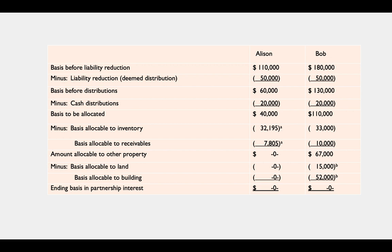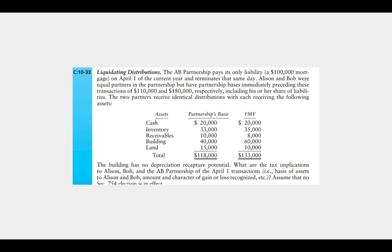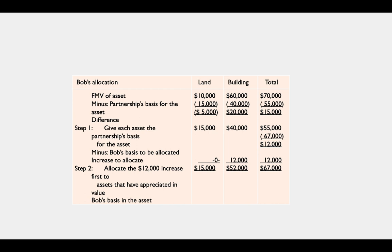When Allison eventually sells the land and building she'll recognize a large gain since her basis is zero. For Bob, after allocating the partnership's basis in inventory and receivables, he has sixty-seven thousand dollars of basis left to allocate to the land and building, which have a combined partnership basis of fifty-five thousand. Step one gives land a forty thousand basis and the building a fifteen thousand basis — totaling fifty-five thousand — and Bob still has twelve thousand more to allocate. Step two allocates that twelve thousand first to assets that have appreciated: the building has appreciated by twenty thousand, so the full twelve thousand is allocated there, giving Bob a basis of fifteen thousand in the land and fifty-two thousand in the building.